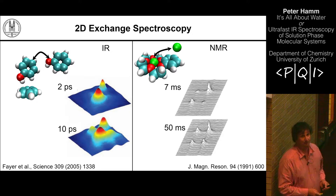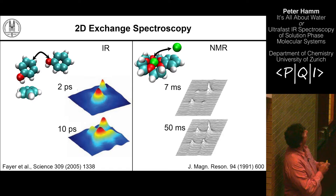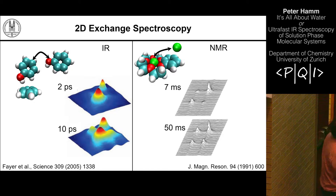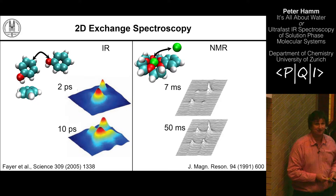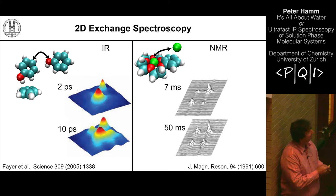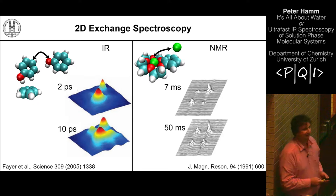On the left side, the same principle applies: the molecular system is a phenol molecule hydrogen-bonding to a benzene molecule, also in some sort of equilibrium between a free state and a bound state, with kinetics between the two states. We see a cross peak that grows in as a function of time. The key difference between the two plots is timescale — the NMR exchange happens on a millisecond timescale, while 2D IR captures picosecond timescales. The other difference is that the NMR data is in black and white and the IR in color, because the NMR paper is 20 years older.